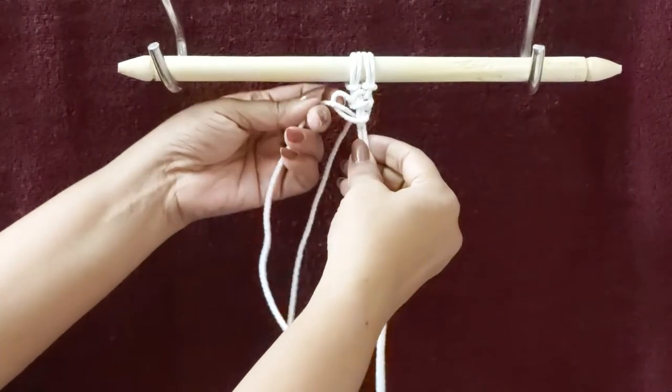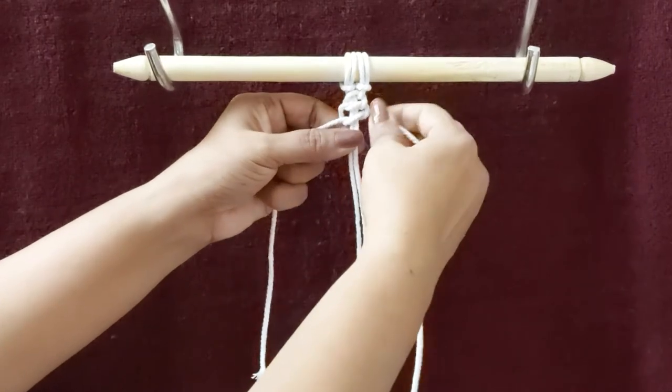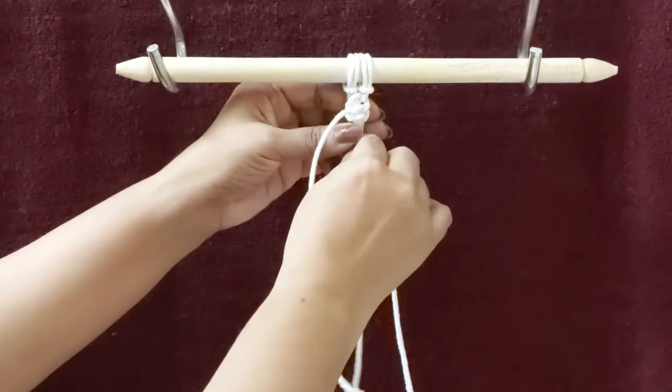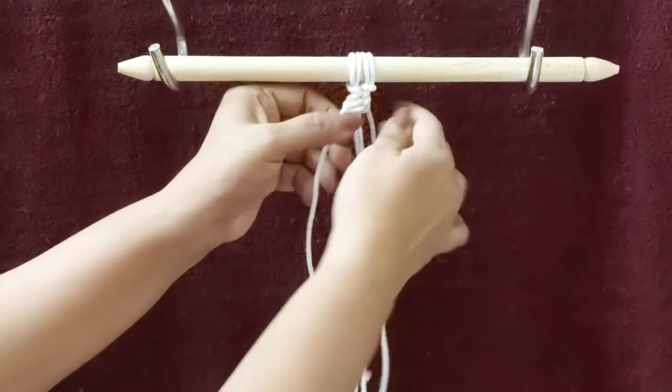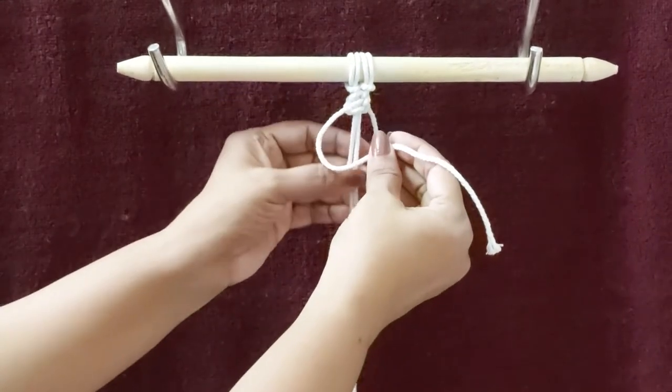You can also do the same by using the fourth string. The knots will get twisted from the opposite side but still create a spiral or twisted effect. So let's go ahead and repeat the knot.